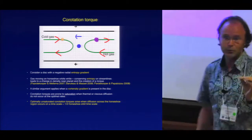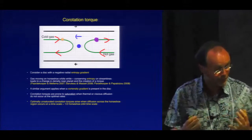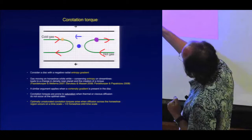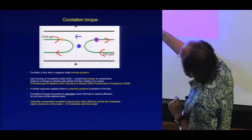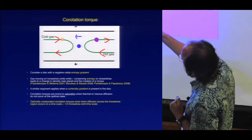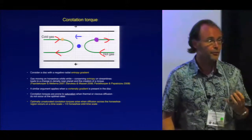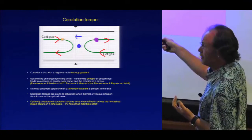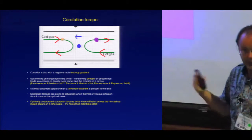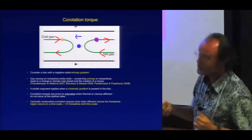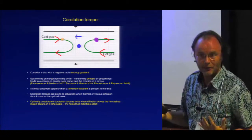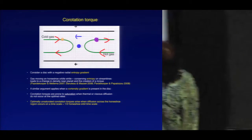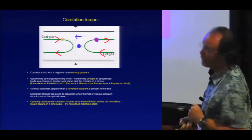Now take the opposite situation where the gas exchanges heat with its surroundings almost instantaneously. The cold blob goes around the horseshoe orbit, continuously exchanging heat, and when it arrives it's completely equilibrated with its surroundings — same temperature, same density, no compression. It essentially dissolves into the background and produces no torque on the planet. So again, no co-rotation torque.